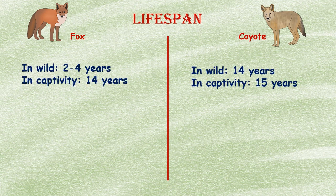Most foxes live for two to four years in the wild and up to fourteen years in captivity, while coyotes can live for up to fourteen years in the wild and up to fifteen years in captivity.